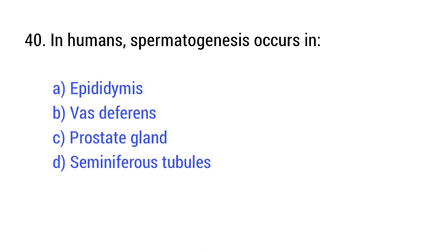Question number 40. Human spermatogenesis occurs in? The right answer is option D: Seminiferous tubules.